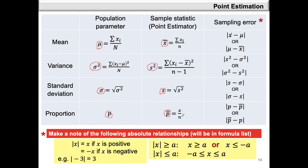Since we make use of the point estimator to estimate the population parameter — keeping in mind that the point estimator is calculated from a sample — a sampling error is likely to arise. A sampling error is defined as the absolute difference between the population parameter and the sample statistic, or equivalently the absolute difference between the sample statistic and the population parameter. For each one of these statistics, we are able to calculate the sampling error.